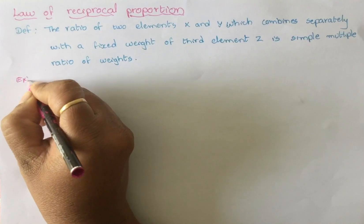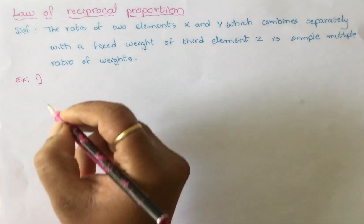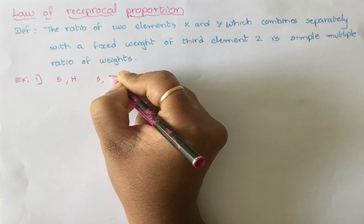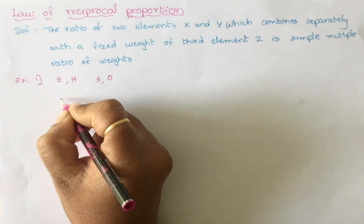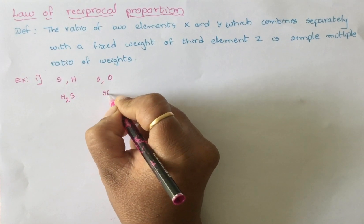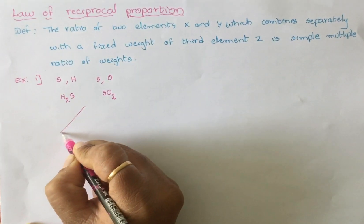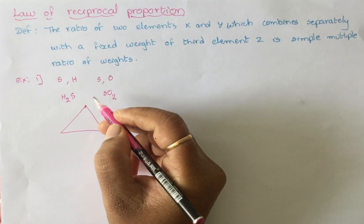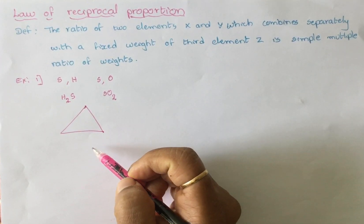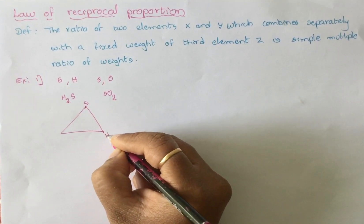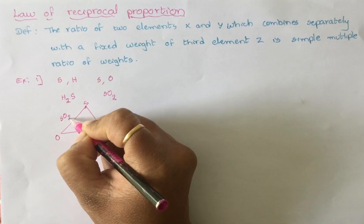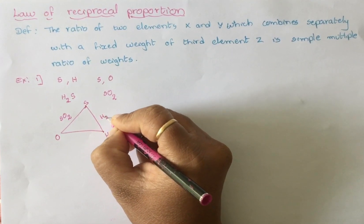Let us discuss with some examples. First, sulfur can combine with hydrogen and forms H₂S. Sulfur can also combine with oxygen and forms sulfur dioxide (SO₂). So sulfur, hydrogen, and oxygen are the three elements x, y, and z. Sulfur and oxygen combine forming sulfur dioxide; sulfur and hydrogen combine forming H₂S.